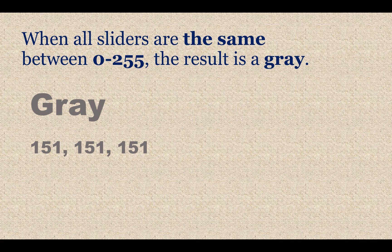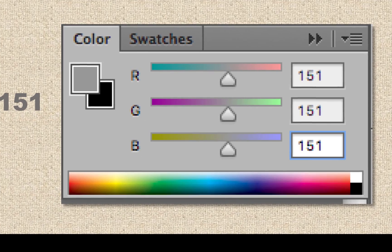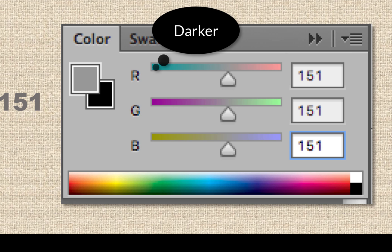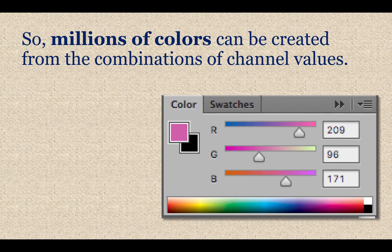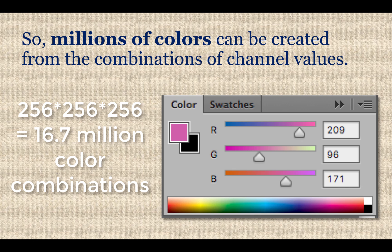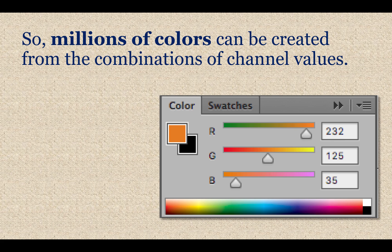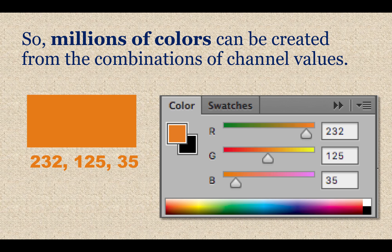The range is 0 to 255 for a total of 256. Anywhere in between black and white makes a gray. When the sliders are all at the same point, they'll always make a gray — higher on the scale toward 255 gives a lighter gray, lower gives a darker gray. These combinations can make millions of colors: three channels of 255 cubed gives about 16.7 million color combinations. For example, a pink might be 209, 96, 171. An orange is 232, 125, 35 — lots of red, some green for a yellowish tone, and only a little blue.